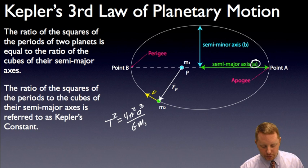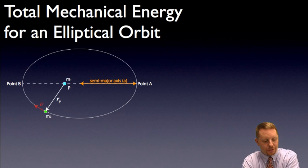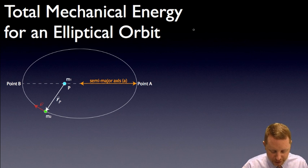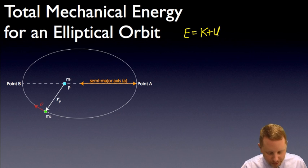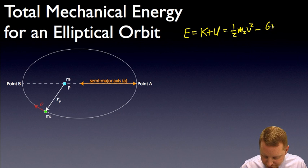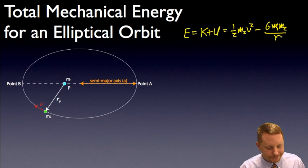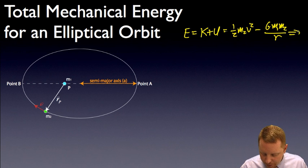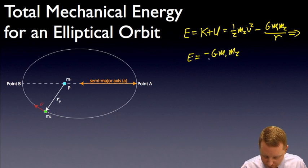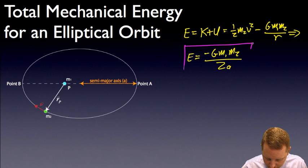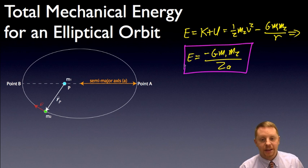Let's briefly look at the total mechanical energy for an elliptical orbit. It is still kinetic plus potential: one-half m2·v squared minus g·m1·m2 over r. However, working through the math for an ellipse, the total mechanical energy turns out to be negative g·m1·m2 over 2a, where a is the semi-major axis rather than the radius r used for circular orbits.